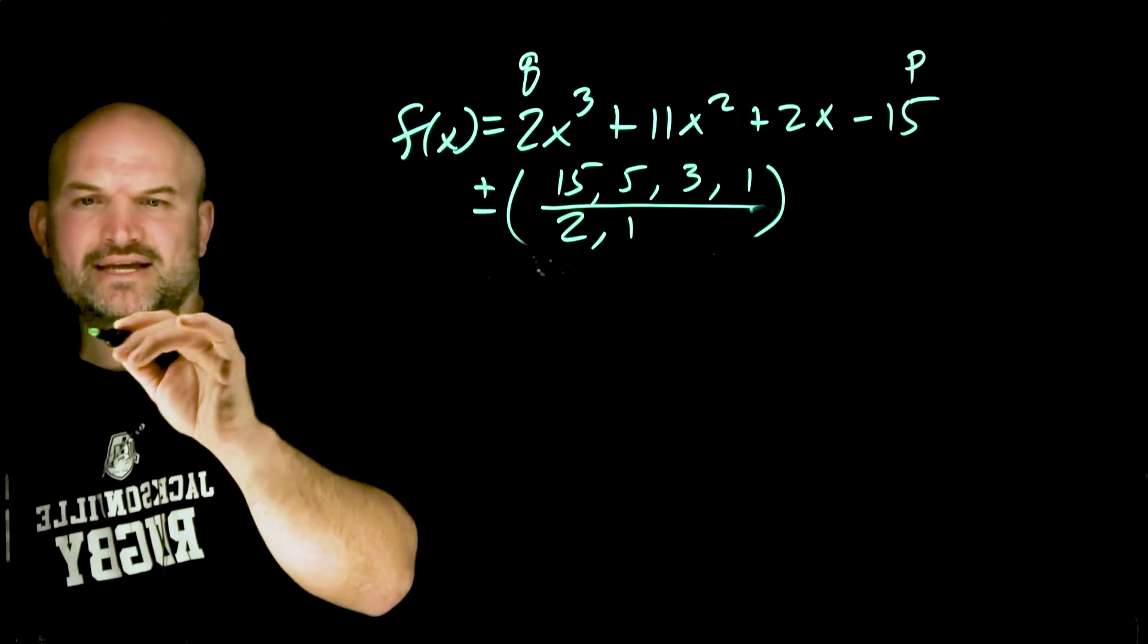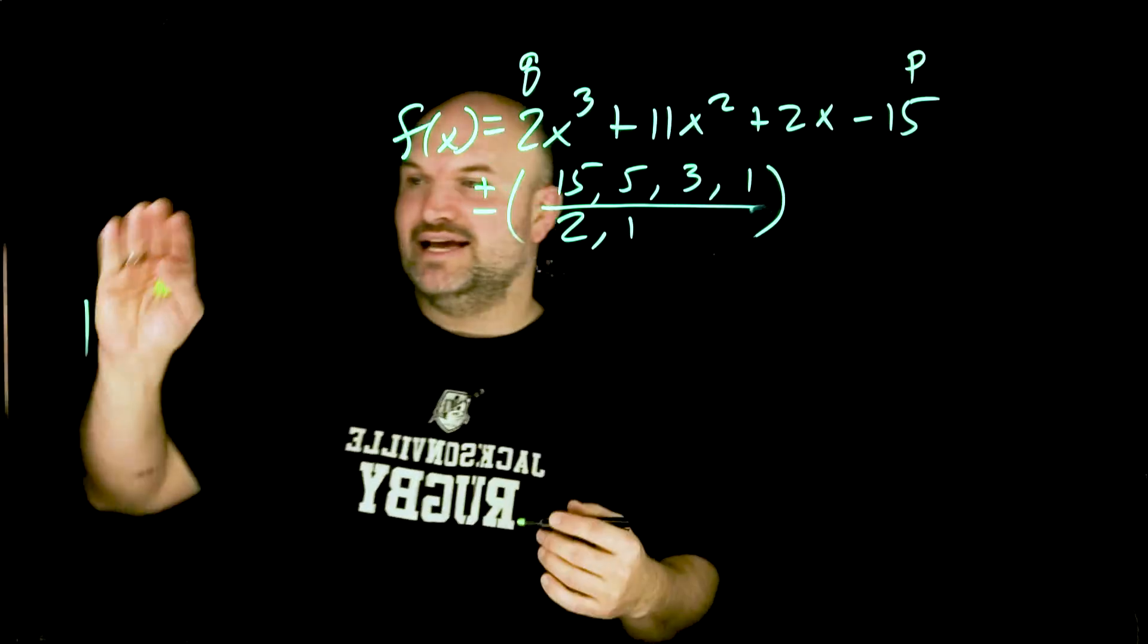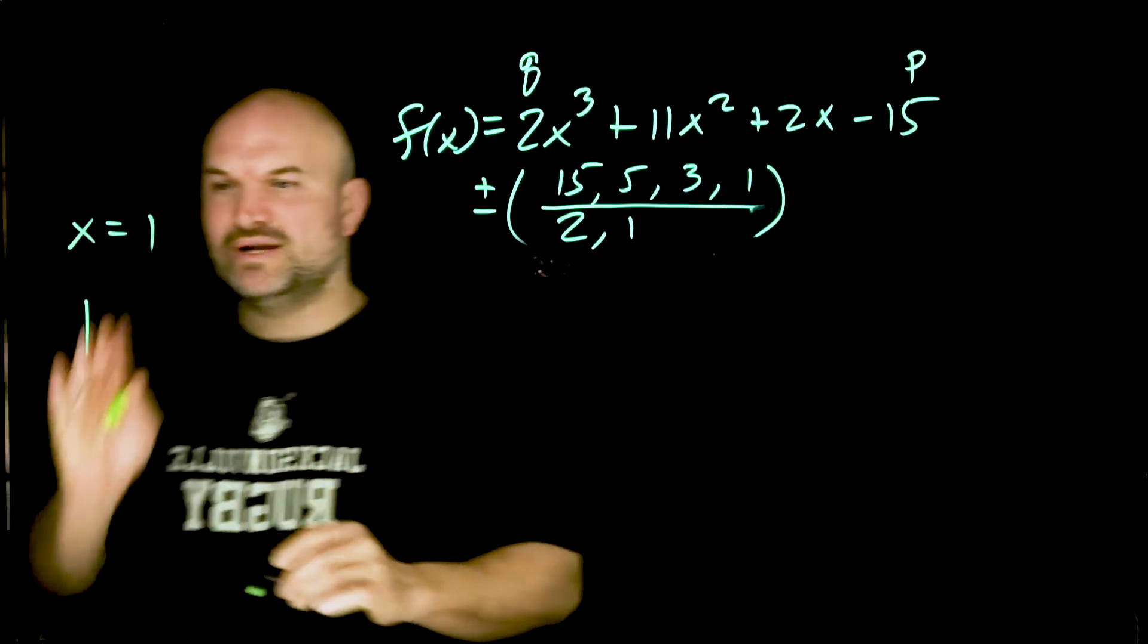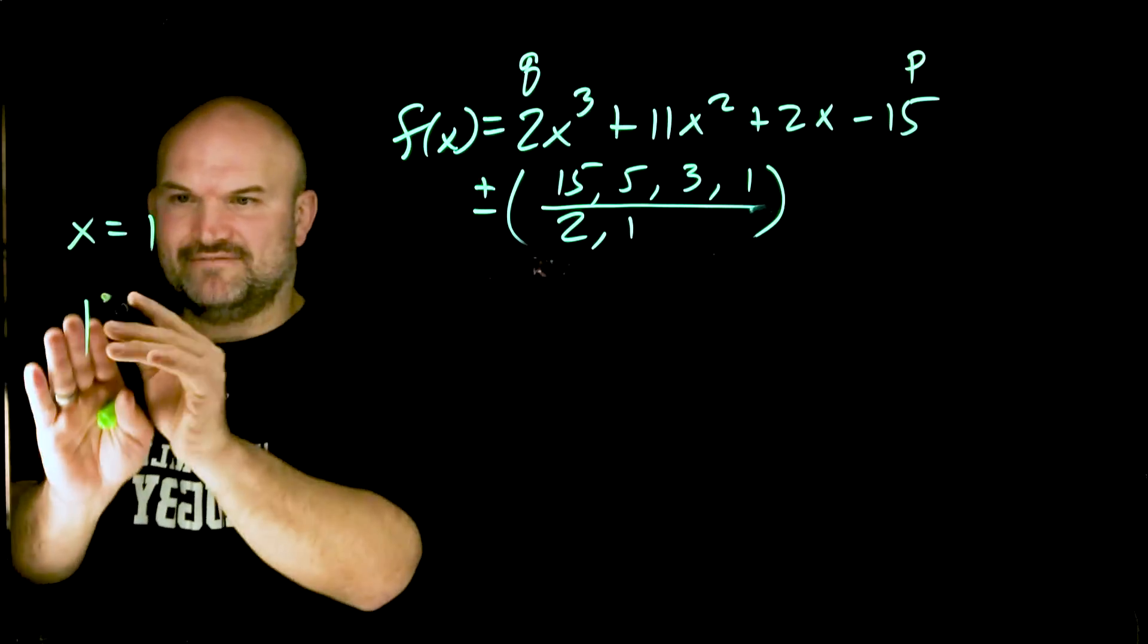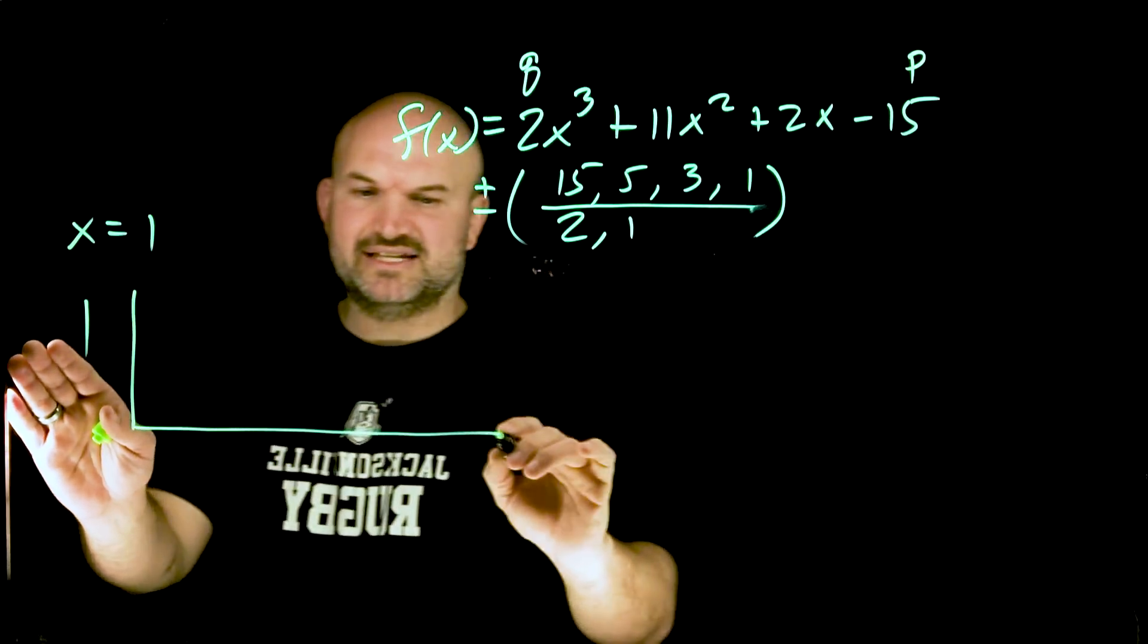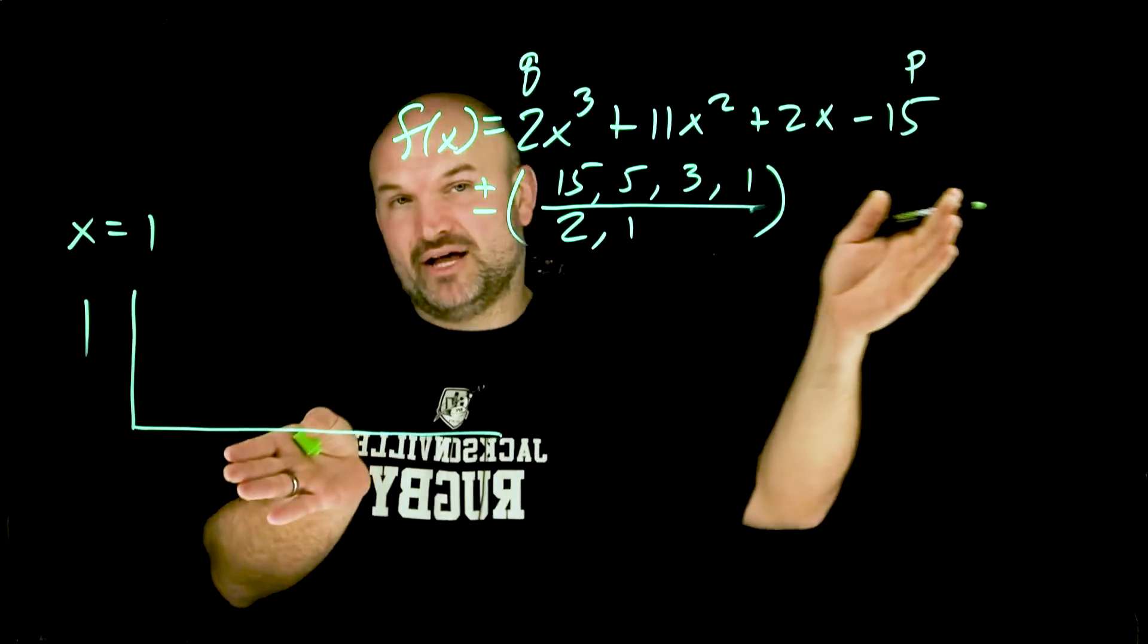I'm gonna say let's see if x equals 1 is a zero. If x equals 1 is a zero we're simply gonna take that value and do synthetic division. We're gonna divide that into the polynomial.